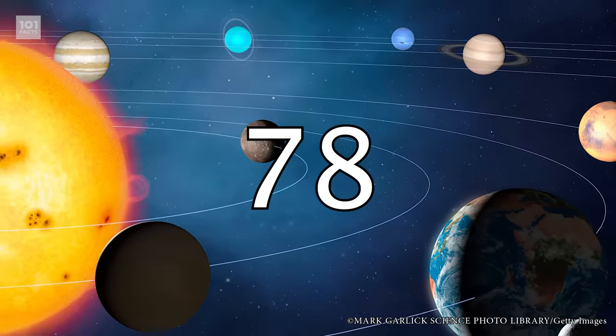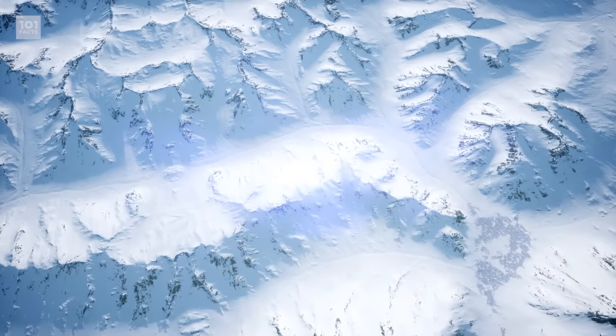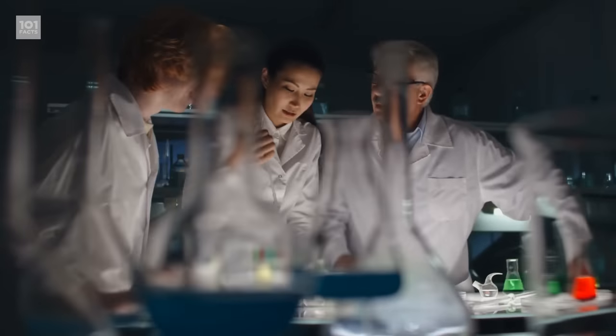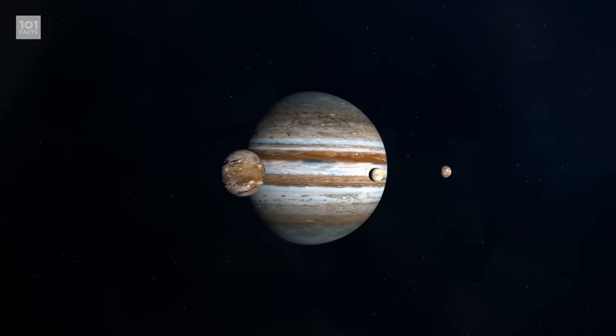Uranus is often categorized as an ice giant, as most of its mass is made up of icy materials like water, methane, and ammonia. And the methane is what gives Uranus its blue color. The planet's atmosphere is mostly made of hydrogen and helium, like Jupiter and Saturn.